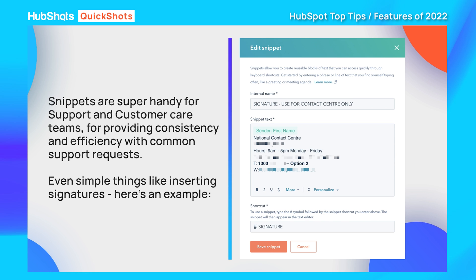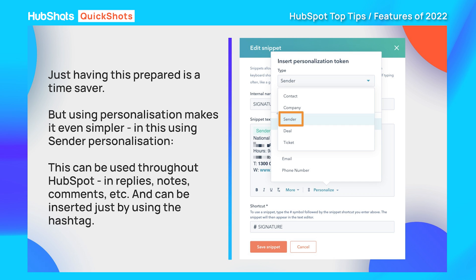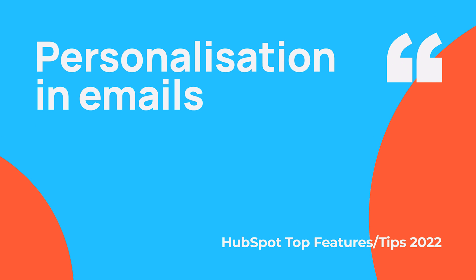One key thing they had in the snippet — the first line said 'delete this and insert your first name.' On our coaching call, we suggested using a personalization token using sender details, specifically the sender's first name. That removes a manual step, because it'll automatically fill in their first name when sending. Any bit of information held within HubSpot can be pulled into a snippet — another shortcut where saving a few seconds here and there all adds up.